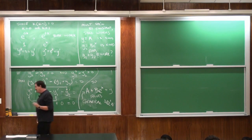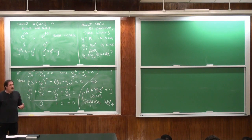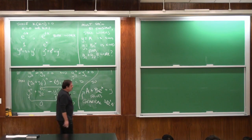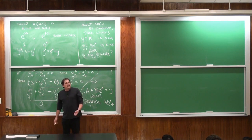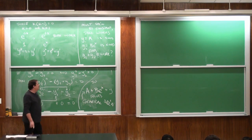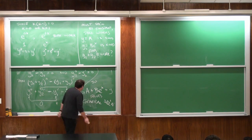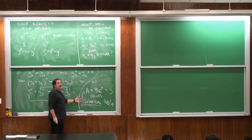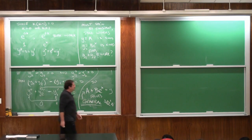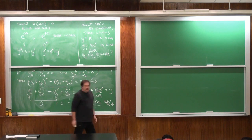You have to read the question carefully — you have to know what you're being asked. If the question says 'find the general solution,' it means you need both constants. If it says 'find any solution,' you can just say y = 0. Let me do another specific example.